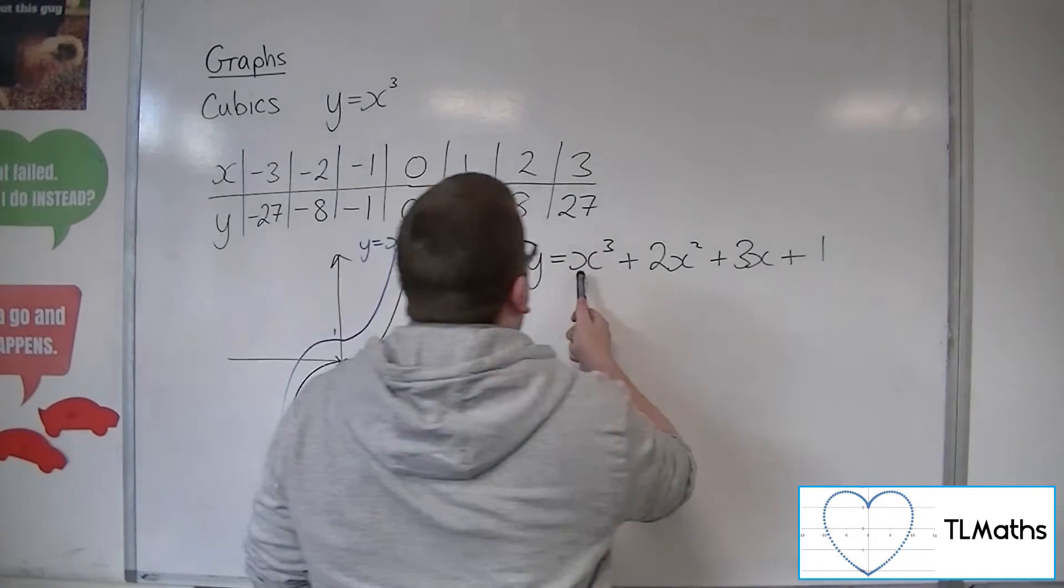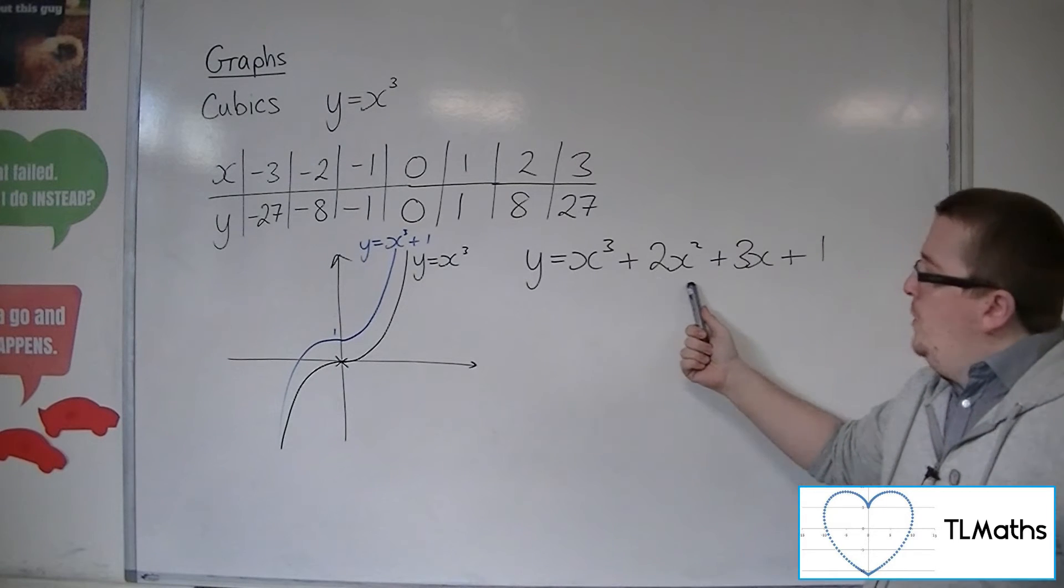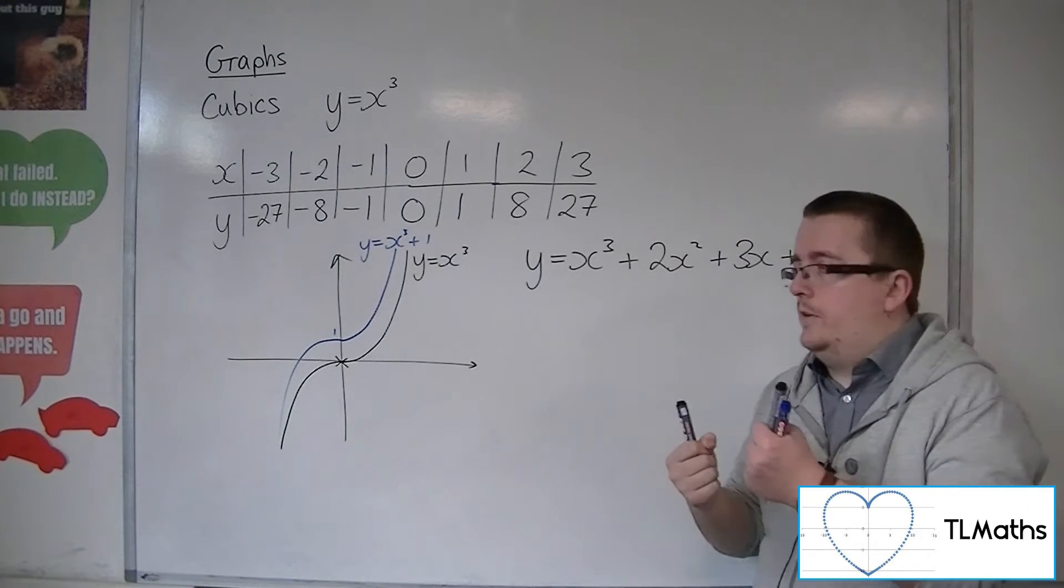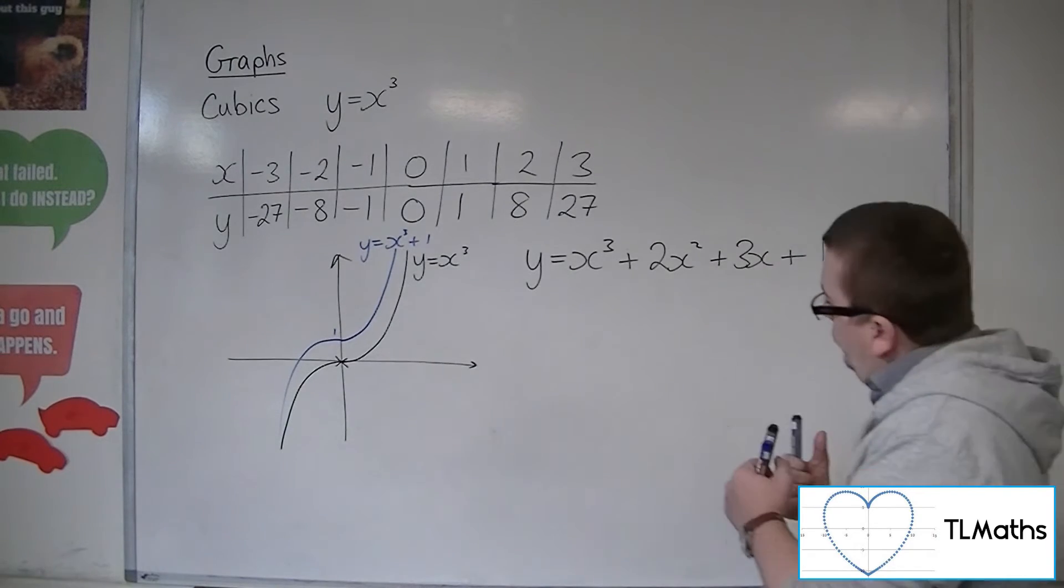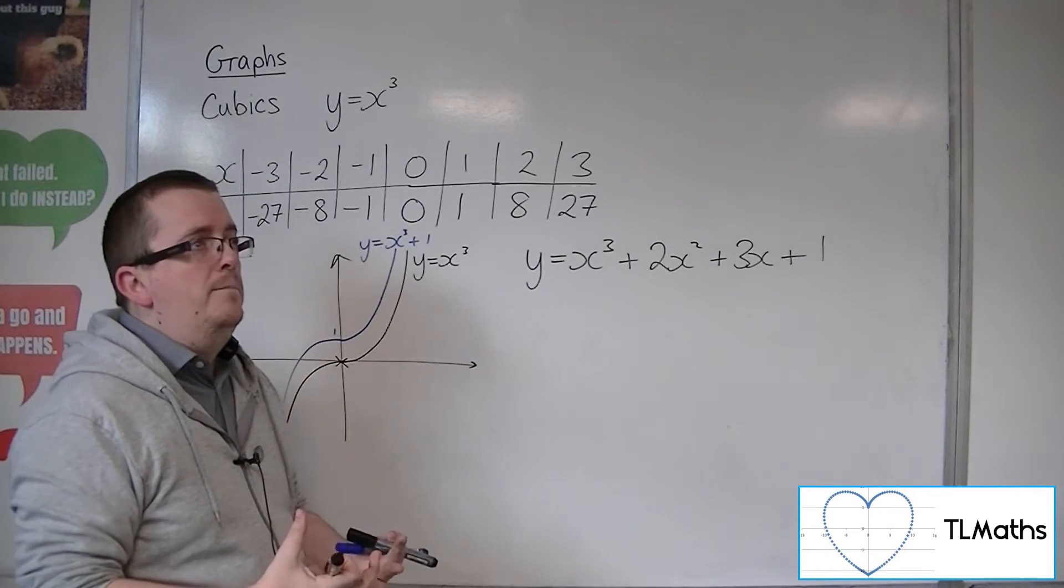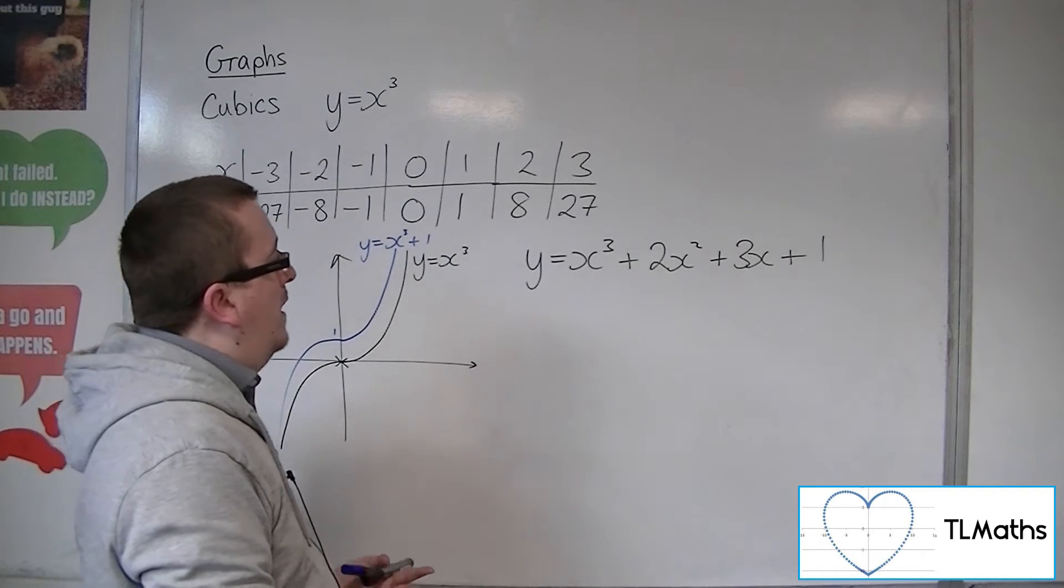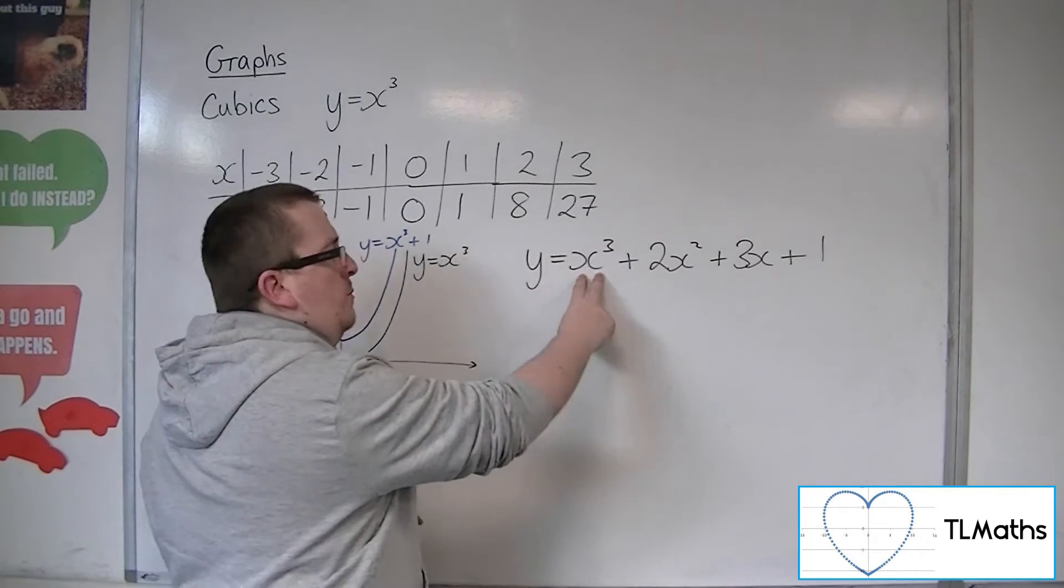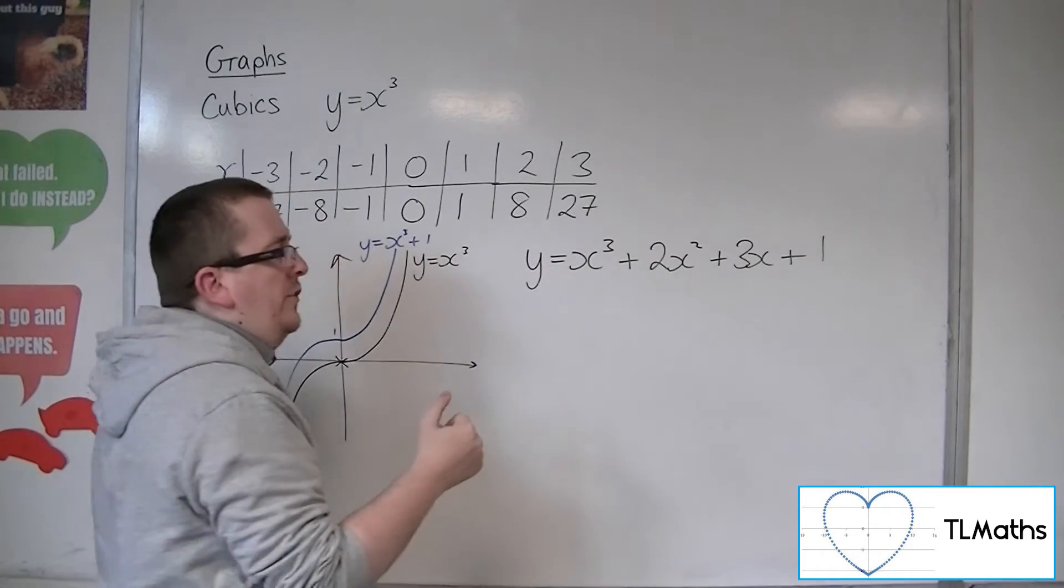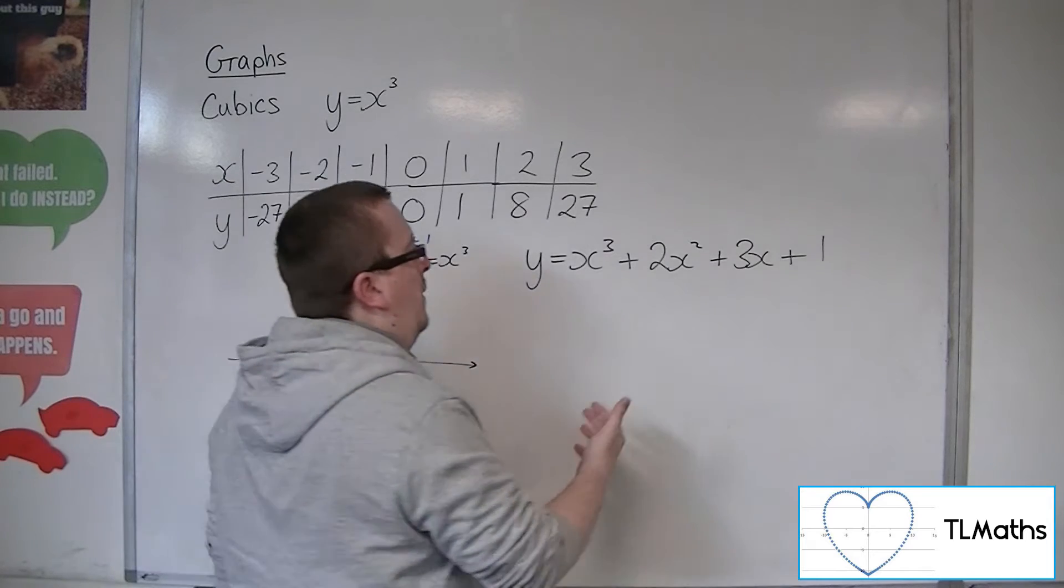So we know what the x cubed is doing, we know what the 1 does, but when you have these other terms involved as well, they are competing. So if you take, for example, the point when x is 0.1, when x is 0.1, then we have 0.1 cubed. So that's very small. And 2 lots of 0.1 squared would be 0.02. That's quite small as well.